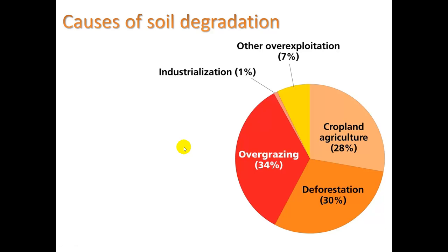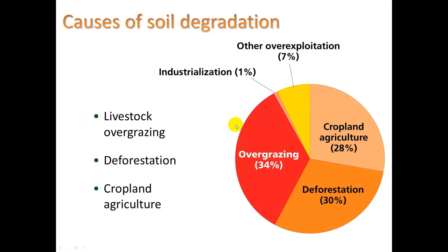What are causes of soil degradation? From this graph we can see that the biggest one is overgrazing — letting animals destroy or consume too much vegetation to the point that it can't grow back. Deforestation, cutting down forests, also contributes to soil erosion. Cropland agriculture, in this case related to the planting of monoculture, where you have an entire field of one crop like wheat or corn, also doesn't lend itself to soil health. And over-exploitation and industrialization. But the first three — overgrazing, deforestation, and cropland agriculture — are the big ones.